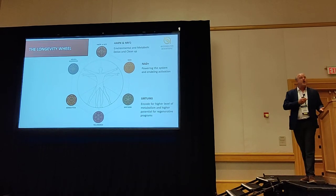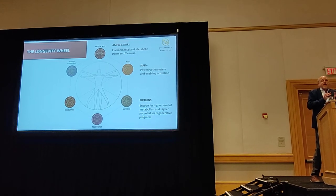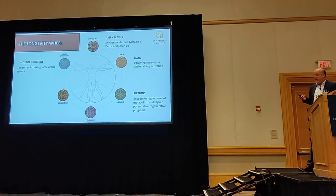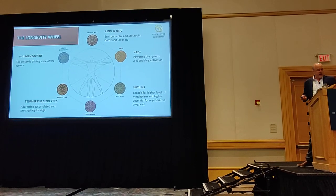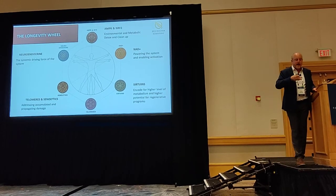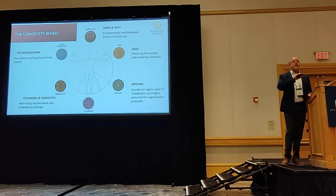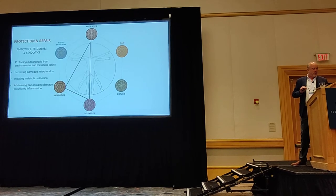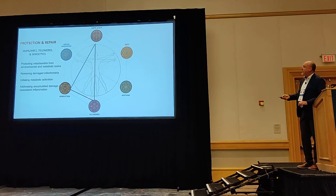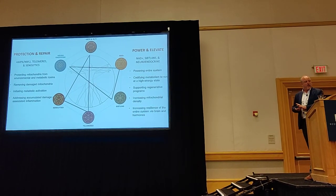Healthy longevity and cardiometabolic proteins are all deacetylated to be active, whereas things like p53 — which promotes senescence as a cancer control mechanism — are acetylated. Sirtuins shift us into high-efficiency neuroendocrine function. Telomeres and sirtuins are about addressing accumulated damage: a toxin gets in past NRF2, damages a telomere, and generates senescence. NRF2, on the other hand, is there to prevent that from happening in the first place.